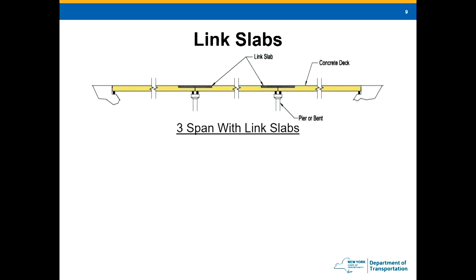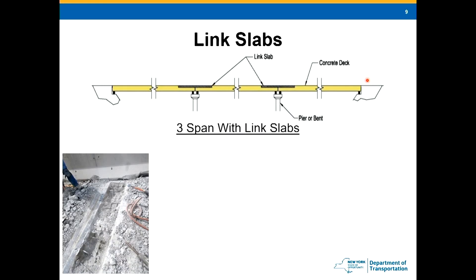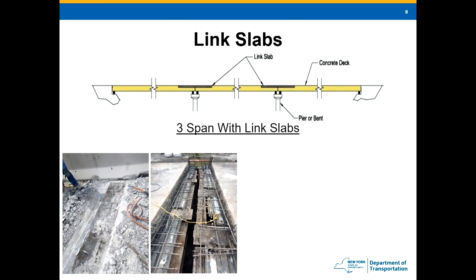So what is a link slab? We have a three-span bridge here, simply supported. Essentially, you go in, remove the joints at your piers, and extend the deck where the joint was. The first construction step is a one-inch-deep saw cut about two feet away from the joint. Then you demo out the rest of the joint with chip hammers and clean everything up. You want to retain your longitudinal reinforcement — you're going to use that as your anchor to anchor the link slab to the deck.